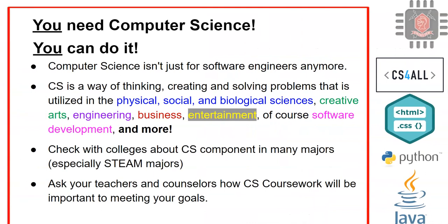You can do computer science. Computer science is not just for software engineers anymore. Really, computer science is a way of thinking. It's a way of creating and solving problems that's utilized in the physical, social, and biological sciences. It's utilized in the creative arts, in engineering, in business, in entertainment, and of course in software development, and more.